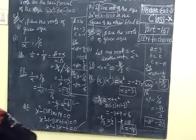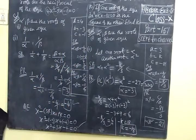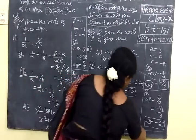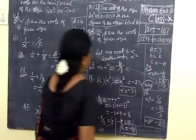We check the answer. For the 10th sum, k equal to minus 18 is correct.